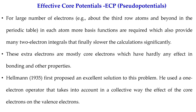This becomes extremely problematic. As we go beyond the third row of the periodic table, the valence electrons are not actually increasing — instead, we get more and more core shells. These core electrons have hardly any effect on bonding and other properties. To expedite calculations, Hellmann first proposed an excellent solution: a one-electron operator that accounts collectively for the effect of core electrons on the valence electrons.